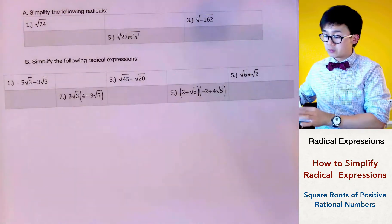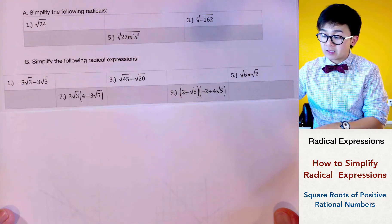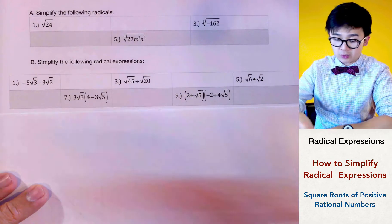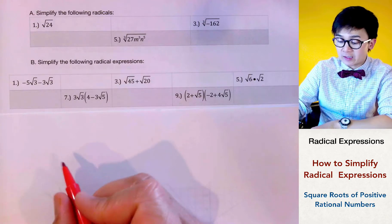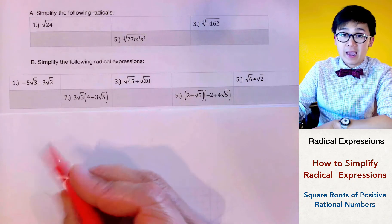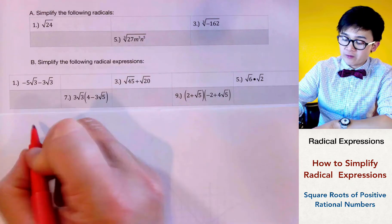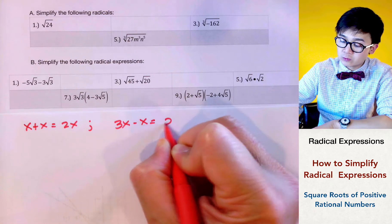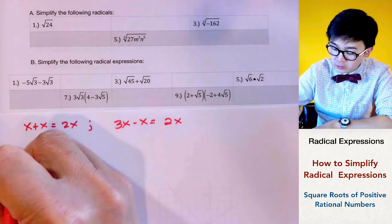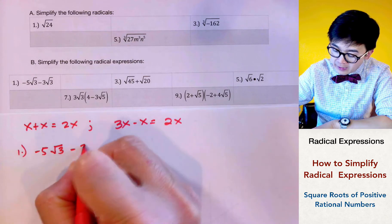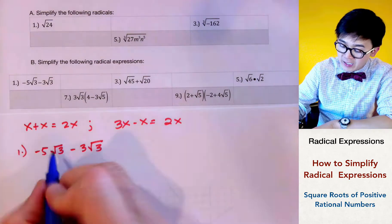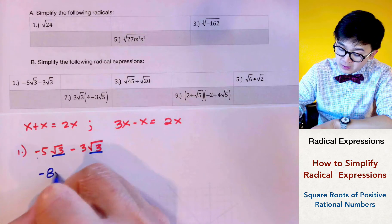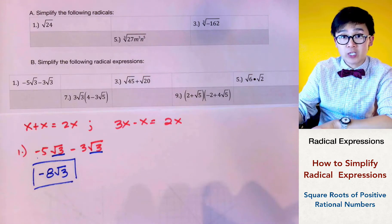Next, we'll simplify radical expressions using addition and subtraction. The idea of combining like terms with square roots is the same as adding and subtracting polynomials. For example, x plus x equals 2x, and 3x minus x equals 2x. Similarly, negative 5 square root of 3 minus 3 square root of 3 gives us negative 8 square root of 3, since the radicals are identical and we combine the coefficients negative 5 and negative 3.